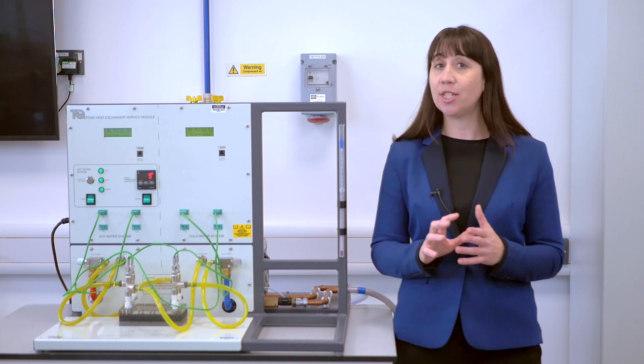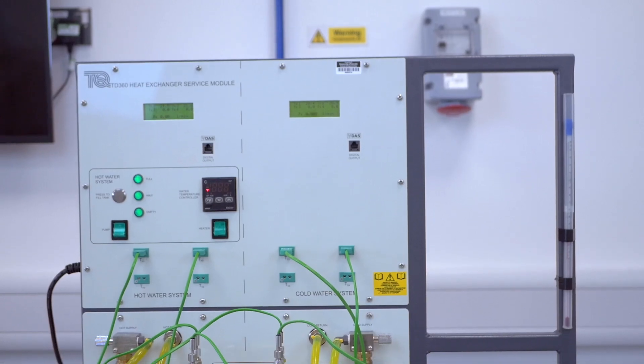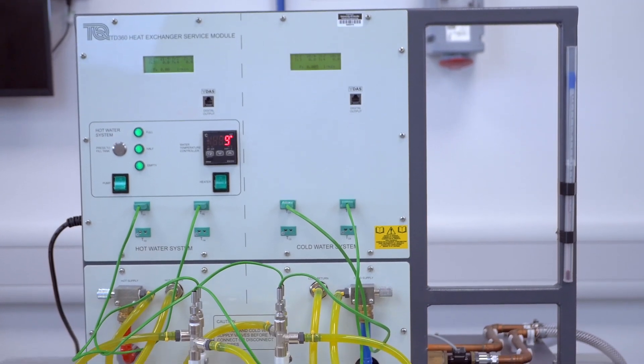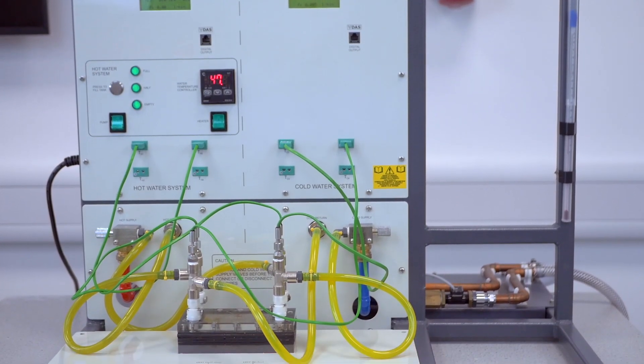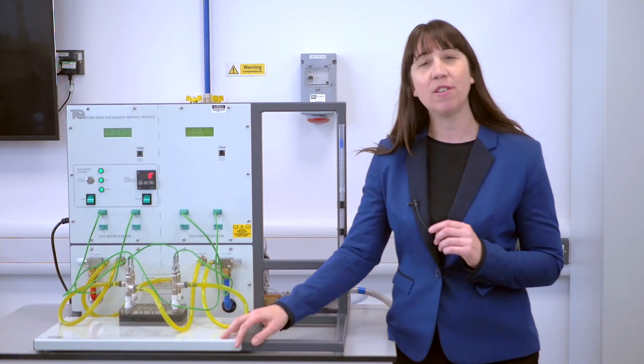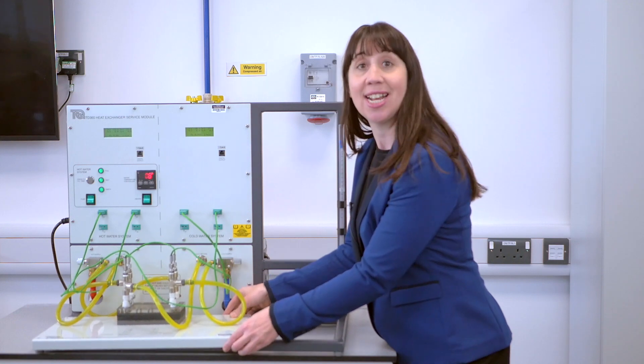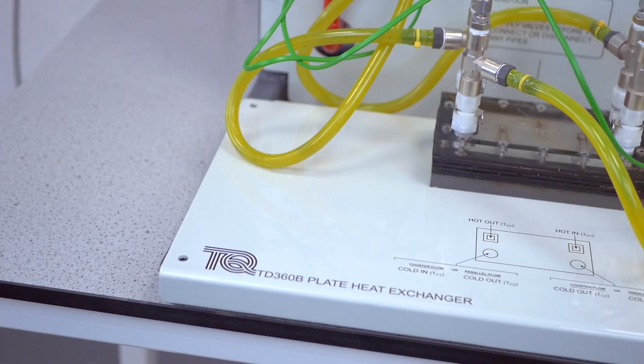Let's take a look at the Benchtop Heat Exchanger service module in more detail. This compact frame sits on a benchtop and features two water circuits, a hot and a cold. The heat exchanger is available separately, fit onto the front of the service module like this and then connect to the water circuits like this.